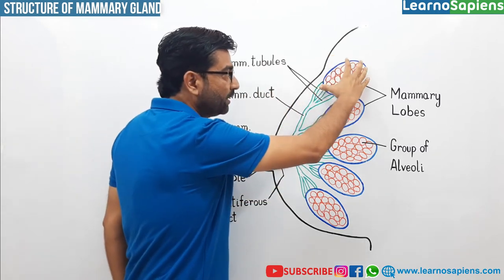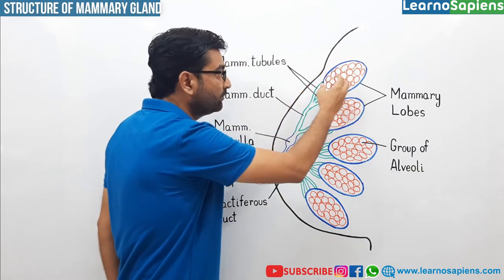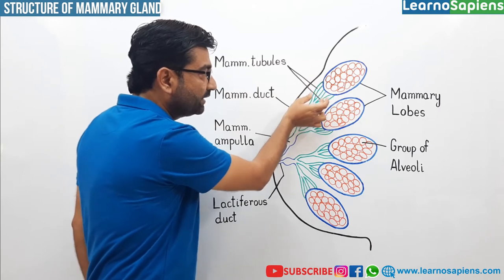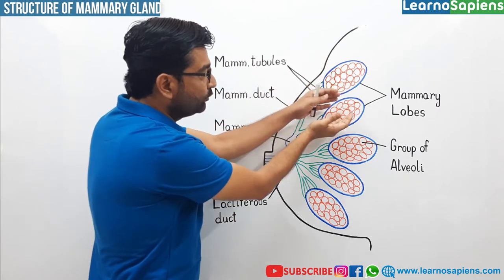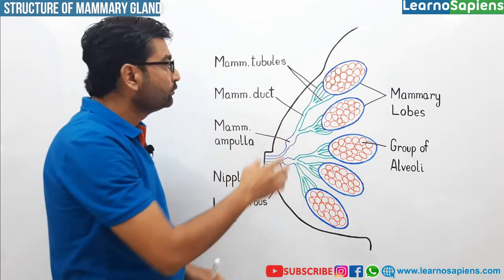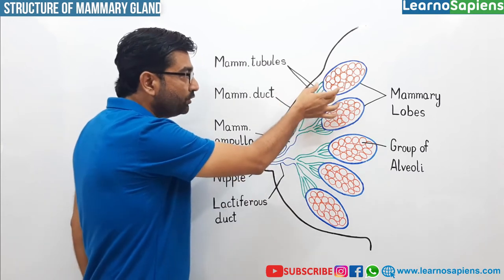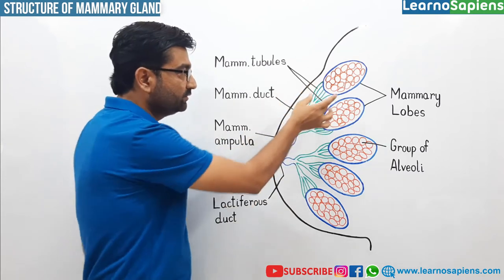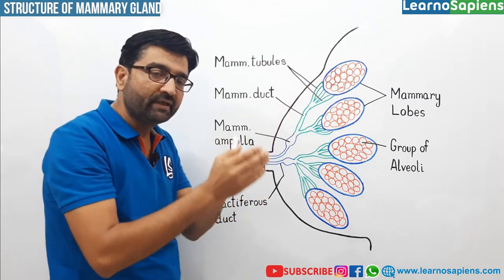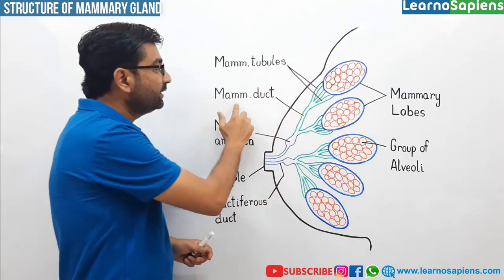So suppose kariye ye ek memory lobe hai. Is memory lobe ke andar dheer sare alveoli. And from every alveoli, memory tubes nikal rahi hai. So yee dekhi memory tubes nikal rahi hai. So from the memory lobe, kai sare alveoli, and these tubules of one lobe — jitnay bhi eek lobe se memory tubules nikalti hai — voh sab join kar jate hai. Dekhi yee sare tubules nikal ke join to form a memory duct.